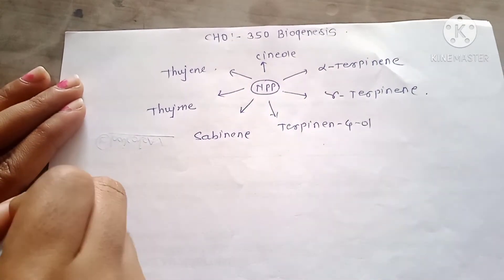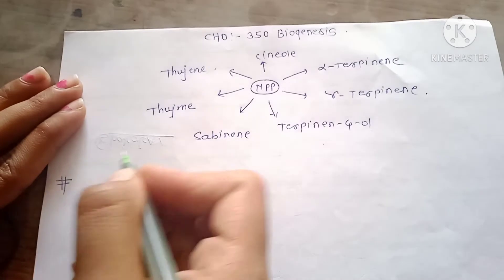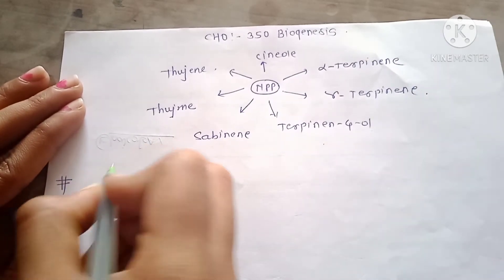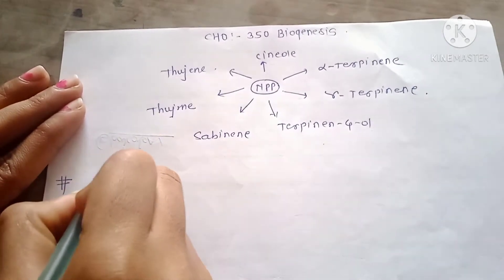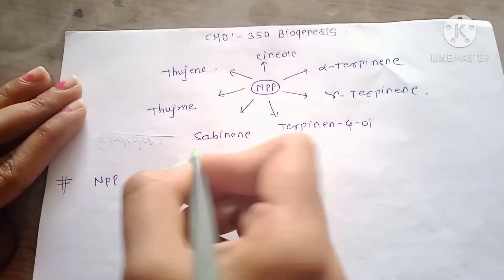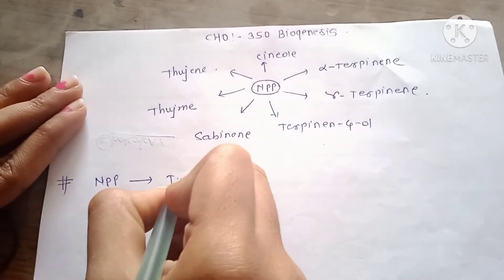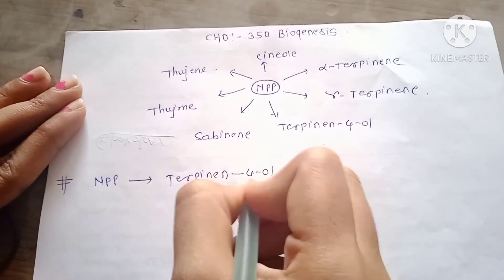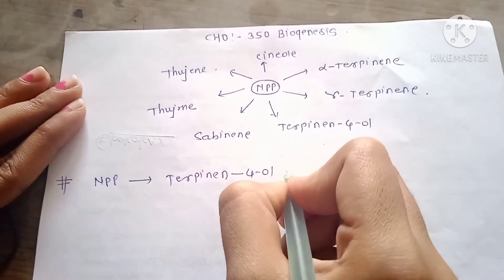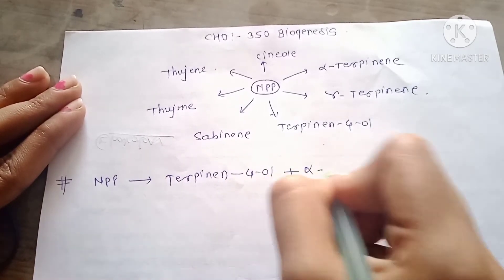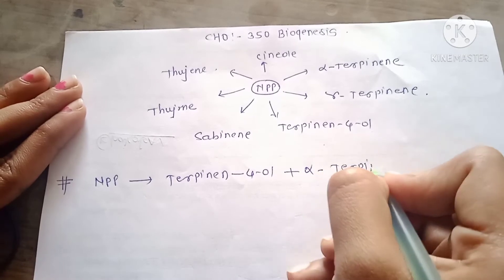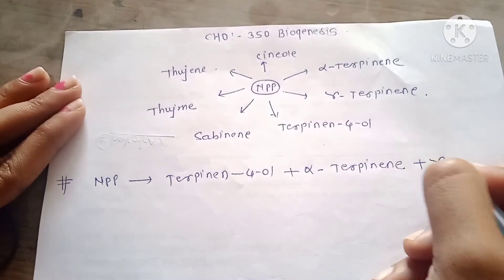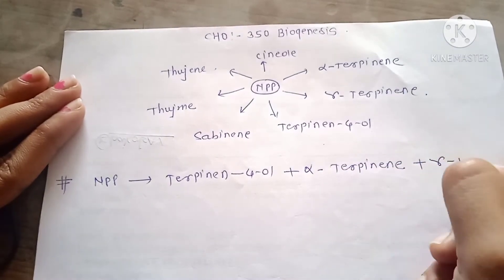Now first, we will see the synthesis of terpinen-4-ol, gamma terpinene, and alpha terpinene from NPP: terpinen-4-ol, alpha terpinene, and gamma terpinene.